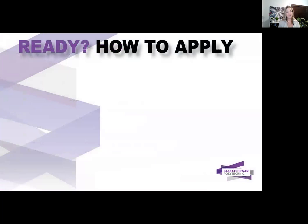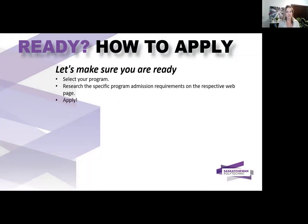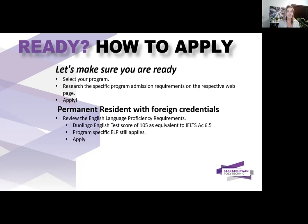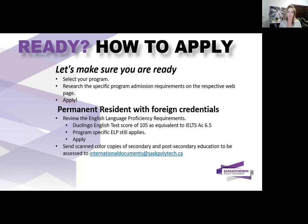Those details are all in your My SaskPolytech portal once you have applied. If you are ready to apply, research the specific program and admission requirements on the respective page, especially the English language proficiency requirements. Permanent residents or Canadian citizens with foreign credentials should carefully review the English language proficiency requirements. Most programs accept the Duolingo English test with a score of 105, equivalent to IELTS academic with an overall score of 6.5 with a 5 in each component.